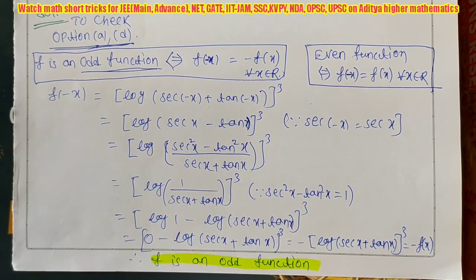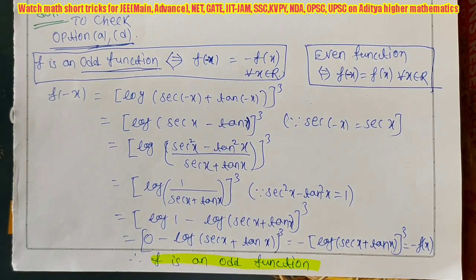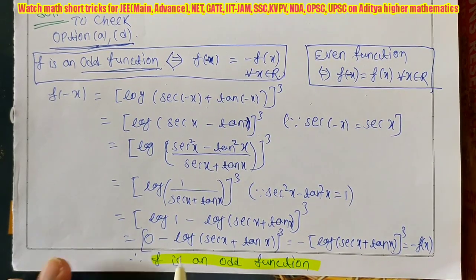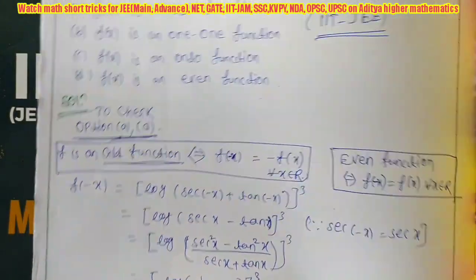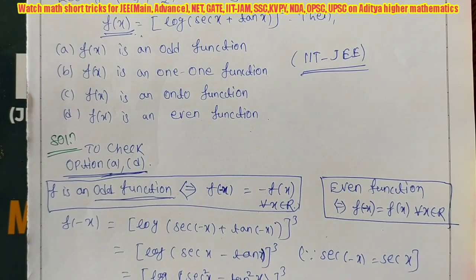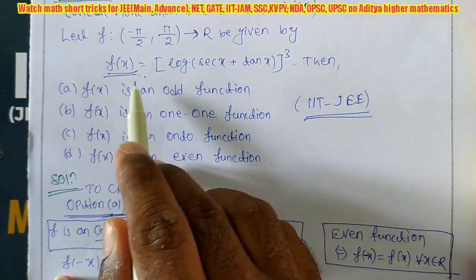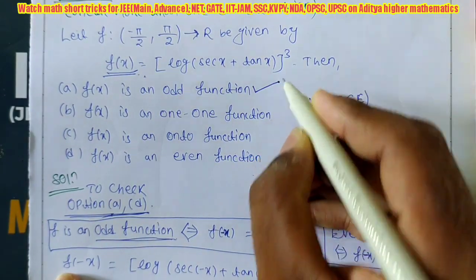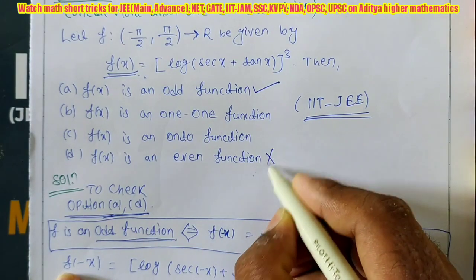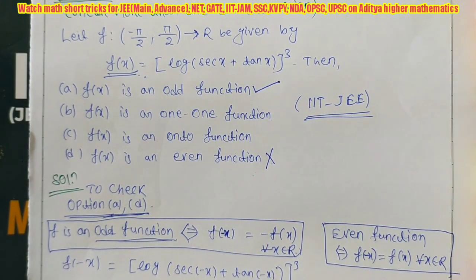We got f(-x) = -f(x), which means f is an odd function. When you replace x with -x and get -f(x), the function is odd; when you get f(x), it is even. Since f is odd and it is not the zero function, it is not an even function. Therefore option A is correct and option D is incorrect. Now we have to check the remaining two options B and C.